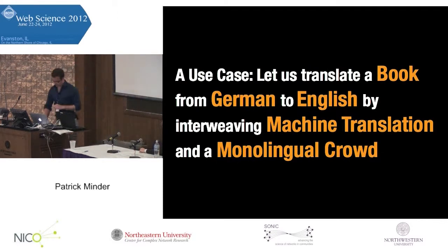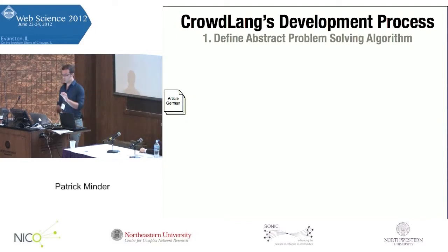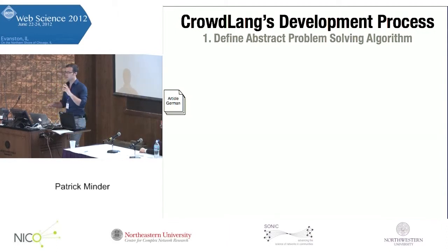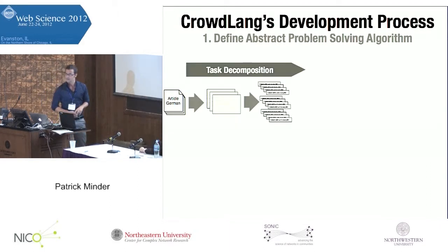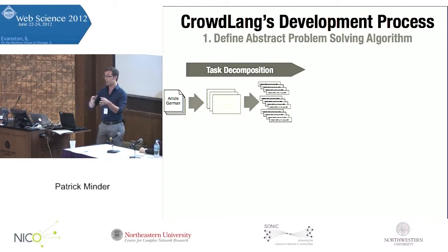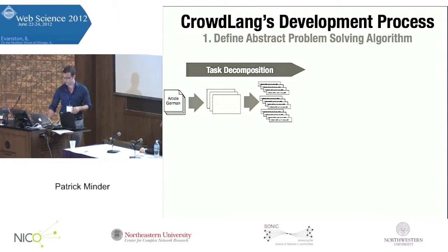By programming with CrowdLang, we follow a simple development process. We start with defining an abstract problem-solving algorithm without thinking about incentives or group consensus. So we have an article or the book — we first decompose the whole task into paragraphs and then into sentences. Then we can process each of those sentences in parallel, which will accelerate our whole process. Since we only have English speakers in our crowd, we do some machine translation.